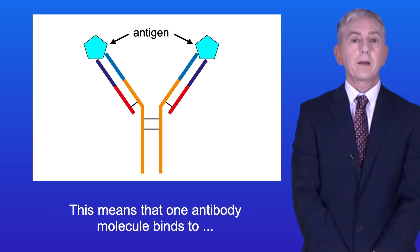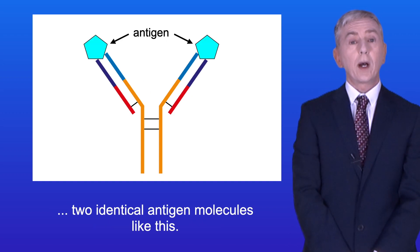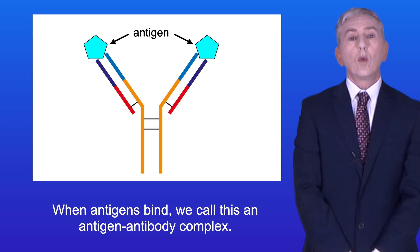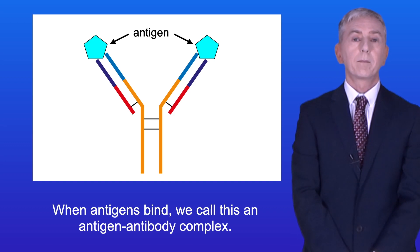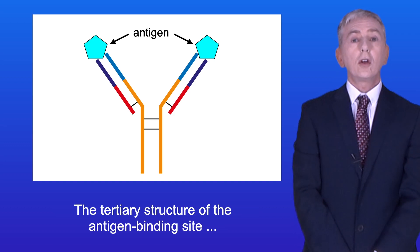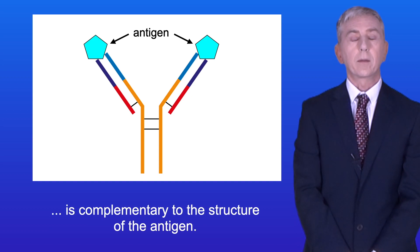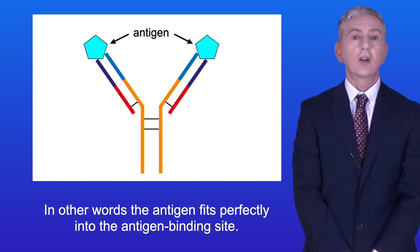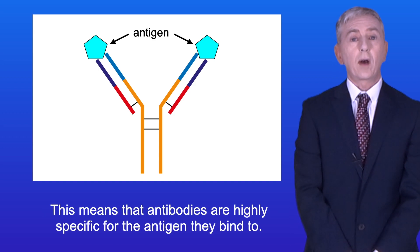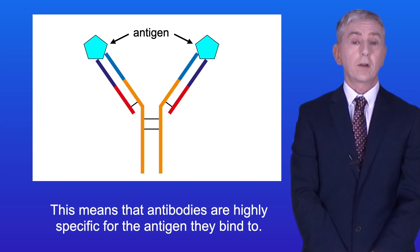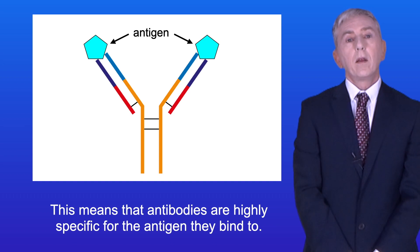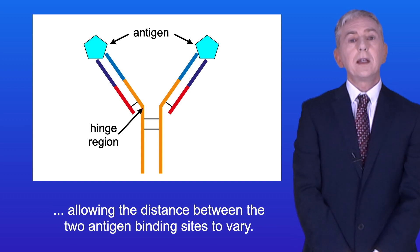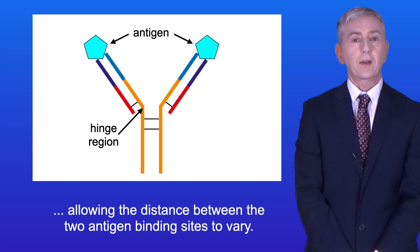One antibody molecule binds to two identical antigen molecules. When antigens bind, we call this an antigen-antibody complex. The tertiary structure of the antigen binding site is complementary to the structure of the antigen — in other words, the antigen fits perfectly into the antigen binding site — and this means that antibodies are highly specific for the antigen they bind to. The hinge region is flexible, allowing the distance between the two antigen binding sites to vary.